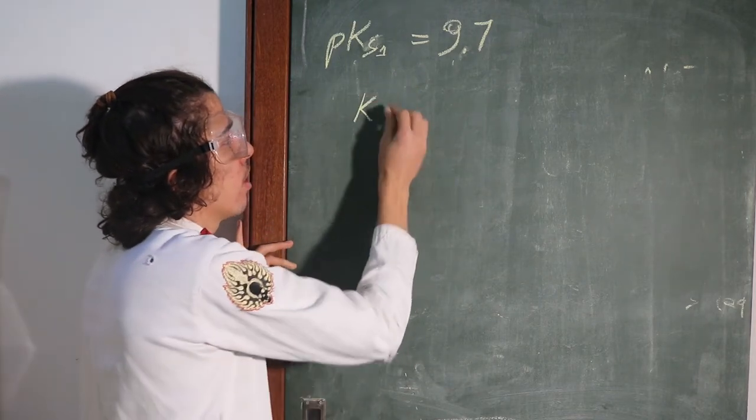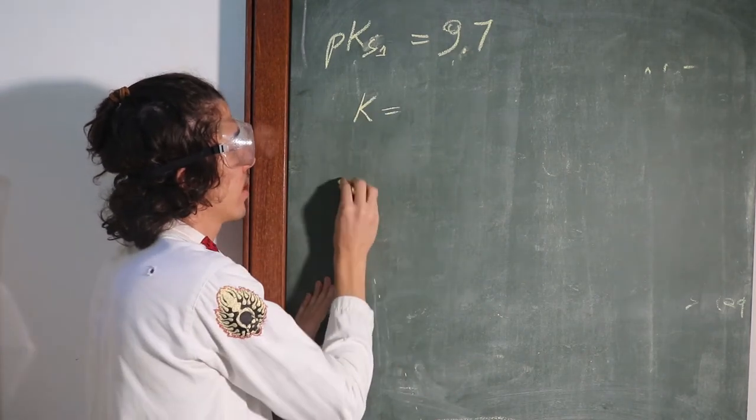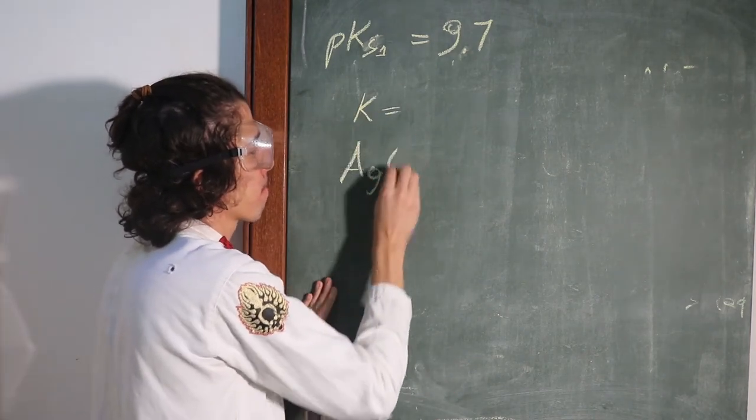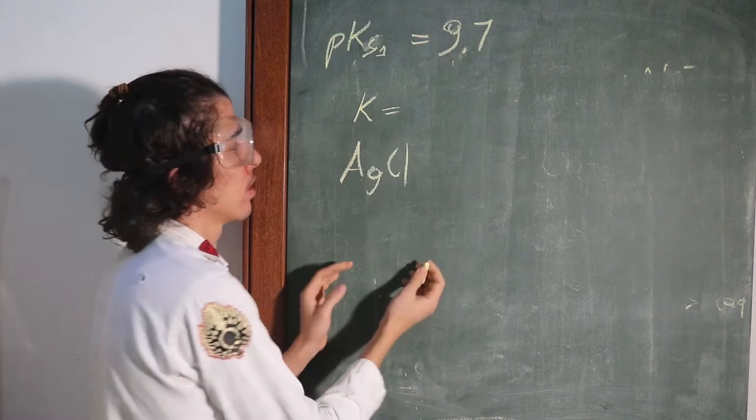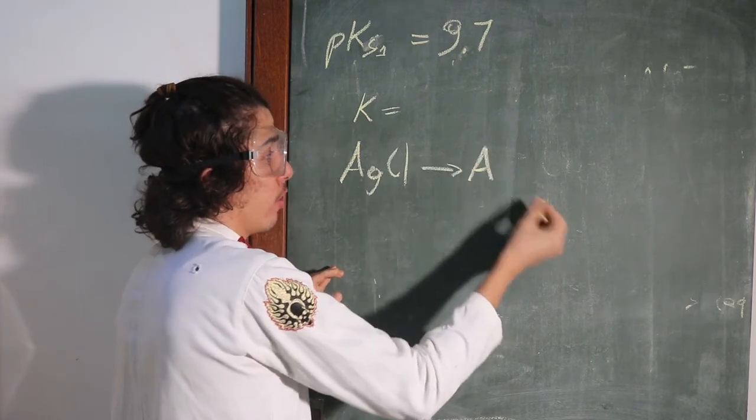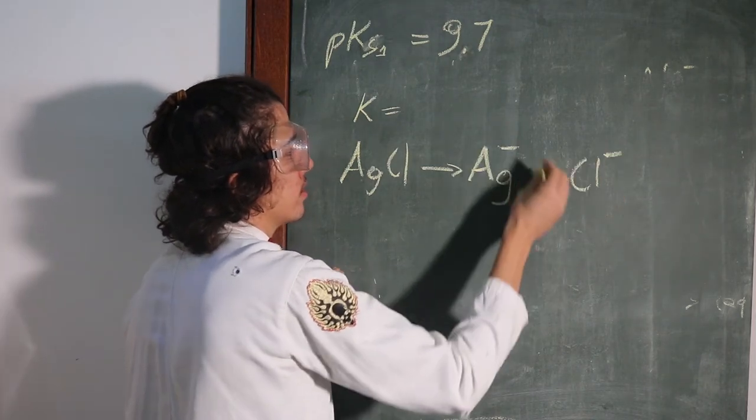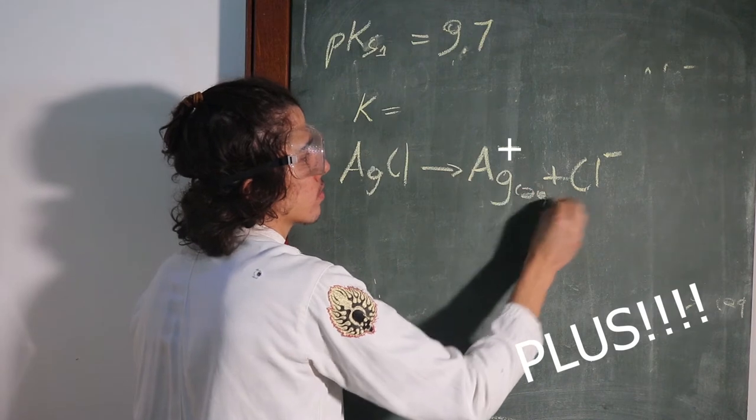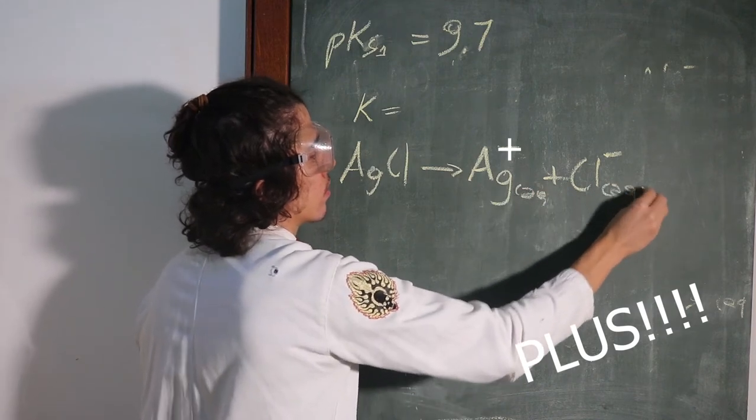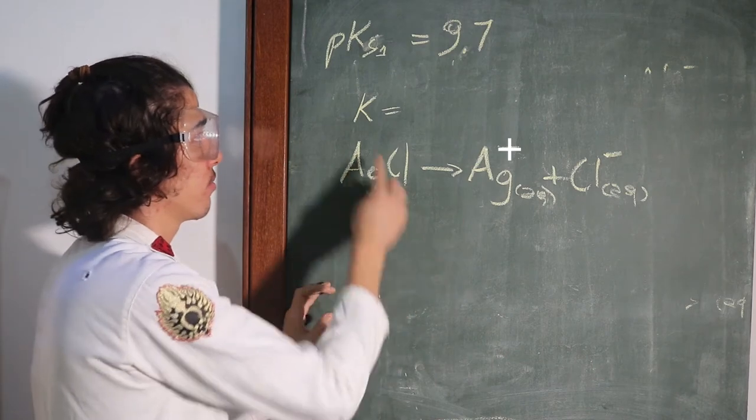So when we put AgCl in water, if it dissolves it's gonna be Ag+ Cl- aqueous, aqueous. And the equilibrium of this, if we want to do the constant, it's gonna be the product of its concentration.